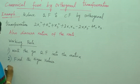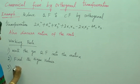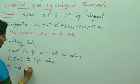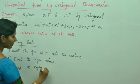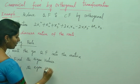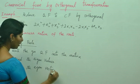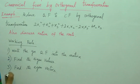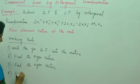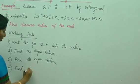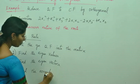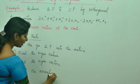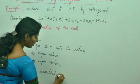Number 3: Find the eigenvectors. Number 4: Find the normalised matrix N.